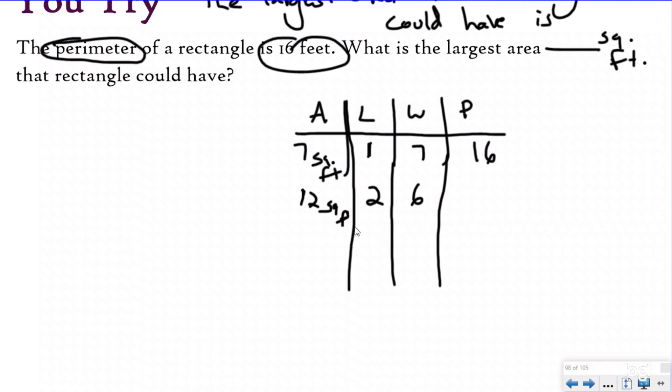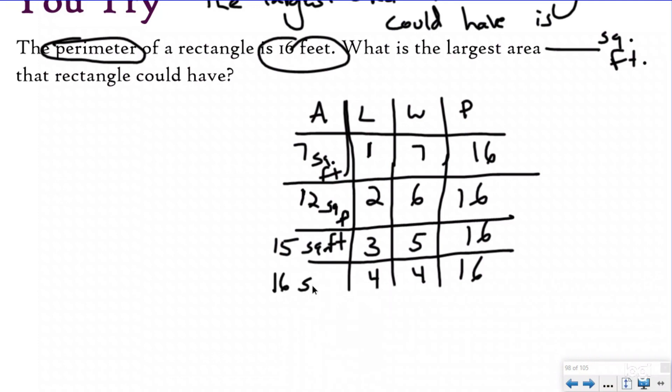At this point, I've now recognized my pattern. When I'm adding one to my length, I'm taking one away. So my next one's going to be three and five. My next one's four and four. And then if I did five, I'd have to go back to three over here. So these are all my different dimensions I could have. My perimeter is 16 for all of them. I recognize my pattern, so I just kept going. I have 15 square feet if my dimensions were three and five, and if my length and width were four, that would give me the biggest area possible of 16 square feet. So if I had a perimeter of 16, the largest area I possibly could have is 16 square feet.